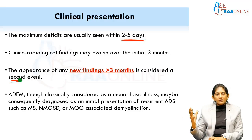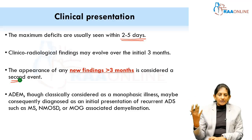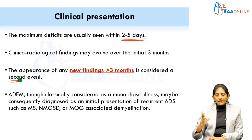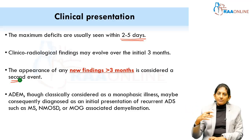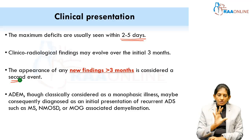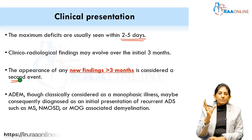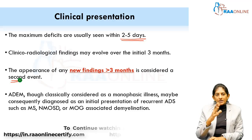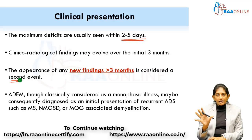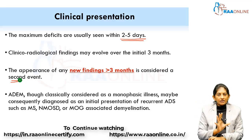Sometimes in the first episode you diagnose the patient as ADEM, but when the child comes back after three or six months with a focal deficit like a stroke-like event without encephalopathy, it might be evolving MS or MOG-associated demyelination. ADEM can be an initial presenting event of other demyelinating syndromes as well — remember that.